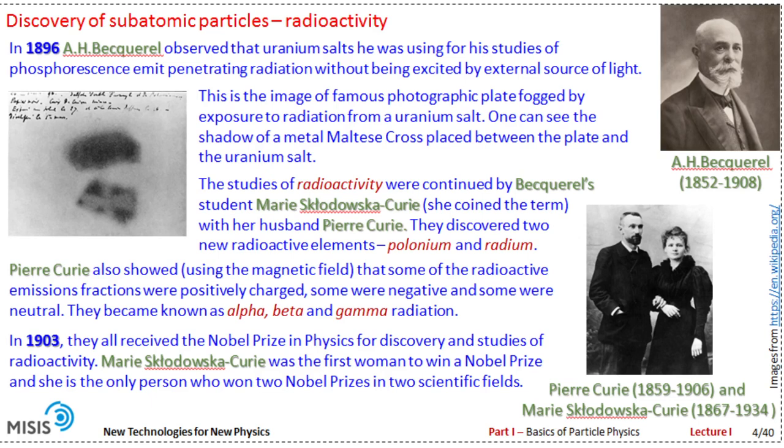The story begins in 1896 when Henri Becquerel, a French physicist, observed that uranium salts emit some penetrating radiation without being excited by an external source of light. On the left you can see the famous image of a Maltese cross placed between the plate and the uranium salt. It was clear there was some new physical phenomenon, later called radioactivity. The name was coined by Marie Skłodowska-Curie, the talented PhD student of Becquerel, who continued this work with her husband Pierre Curie. They discovered besides uranium two new radioactive elements: polonium and radium.